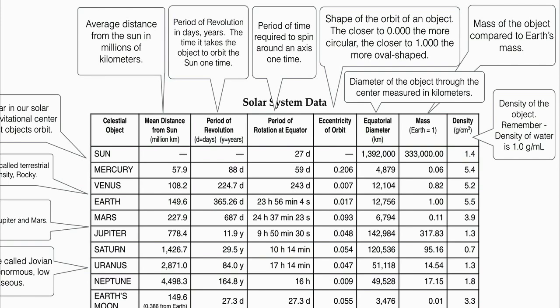A common Regents question about density asks: of the planets in this table, which one could float in water if placed in it? The answer is Saturn, because Saturn has a density of 0.7 grams per centimeter cubed, which is lower than the density of water, so it would float. It's a ridiculous thing to consider since it can't actually be done, but the Regents like to ask that question — so remember that we use water as the reference point for density in terms of sinking and floating.